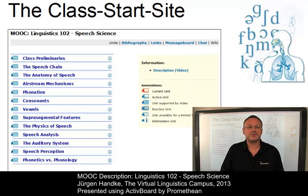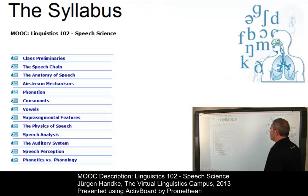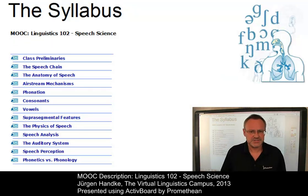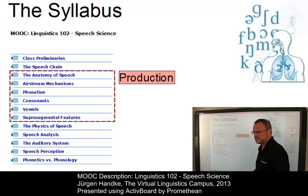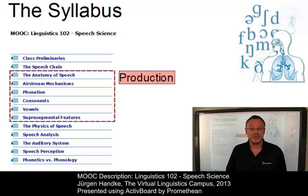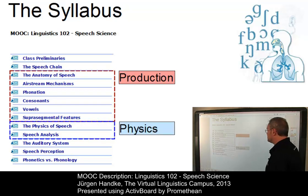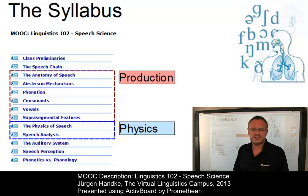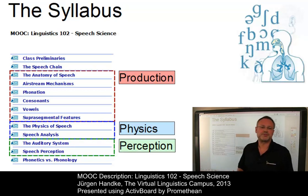Let us now look at the content of the class, traditionally referred to as the syllabus. The class is subdivided into three central parts. The first deals with the production of speech, also known as articulatory phonetics. Then we will look at the physics of speech, alternatively labelled acoustic phonetics. And finally, we will deal with the perception of speech, also known as auditory phonetics.